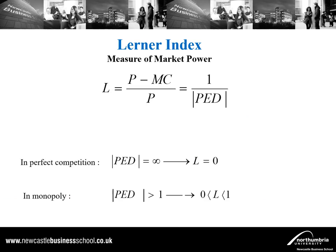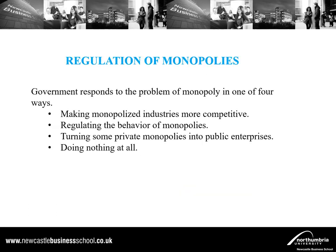We can restate the Lerner Index in terms of one divided by the price elasticity of demand. As the price elasticity of demand approaches infinity, the Lerner Index approaches zero — we are facing a perfectly competitive market structure because consumers are very responsive to any change in price, as they can purchase elsewhere. If the price elasticity of demand is greater than one but not infinite, we are dealing with a monopoly where the Lerner Index lies between zero and one.